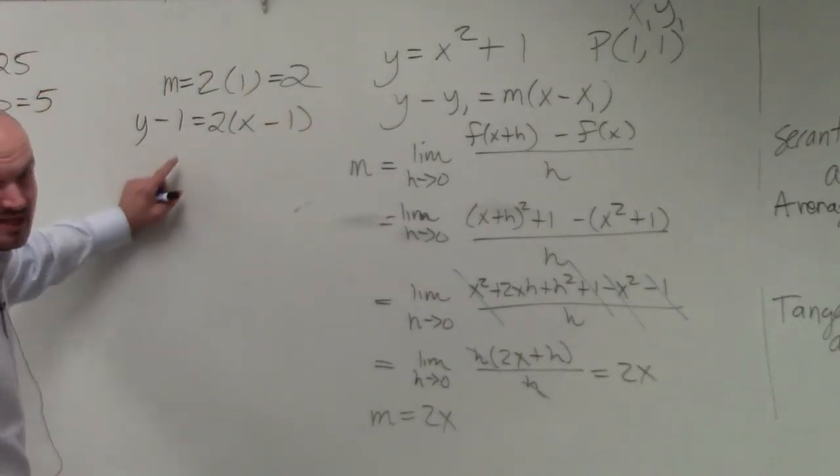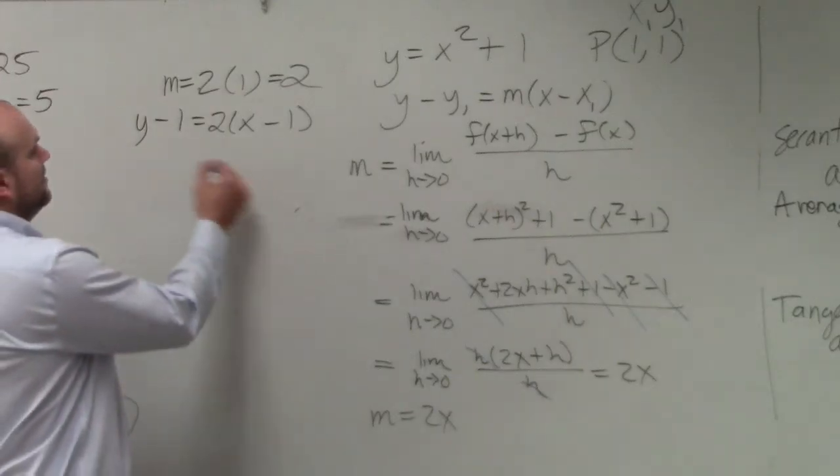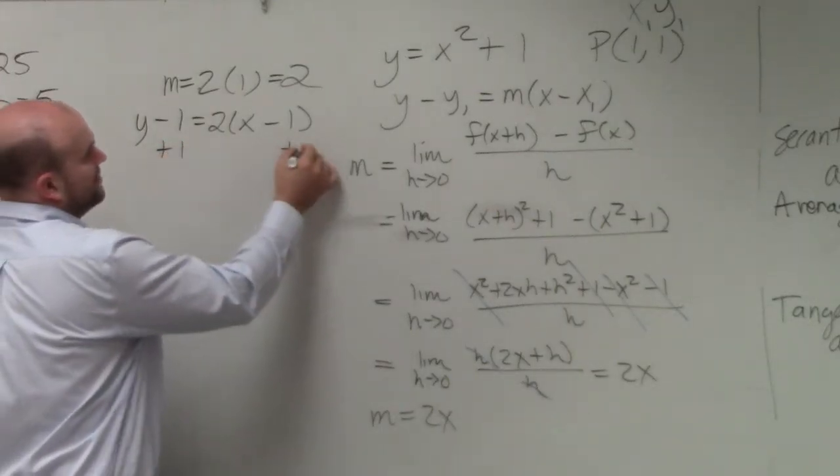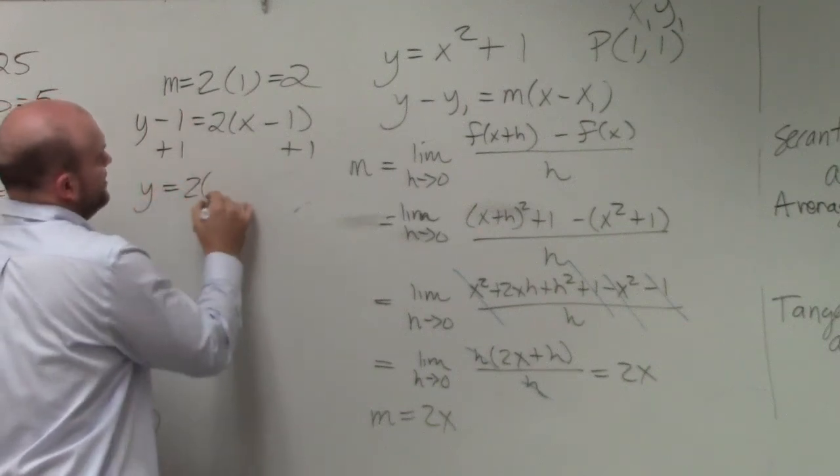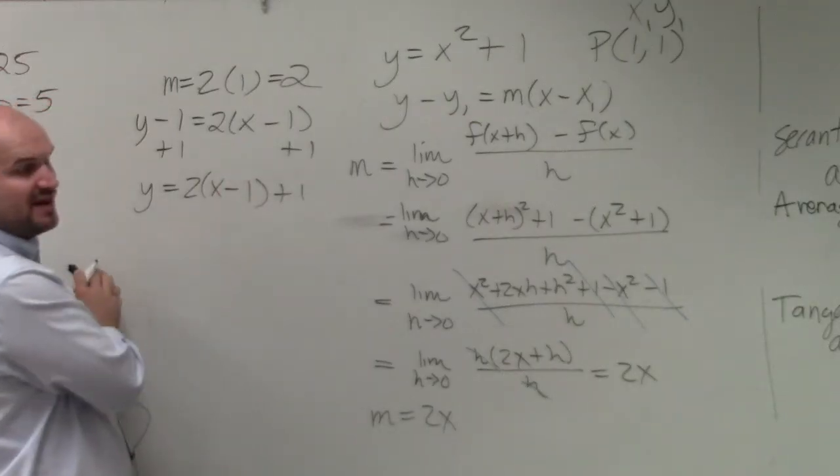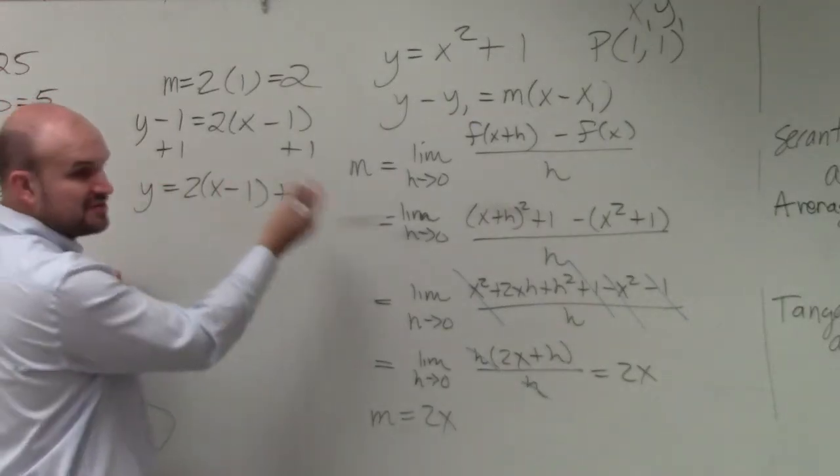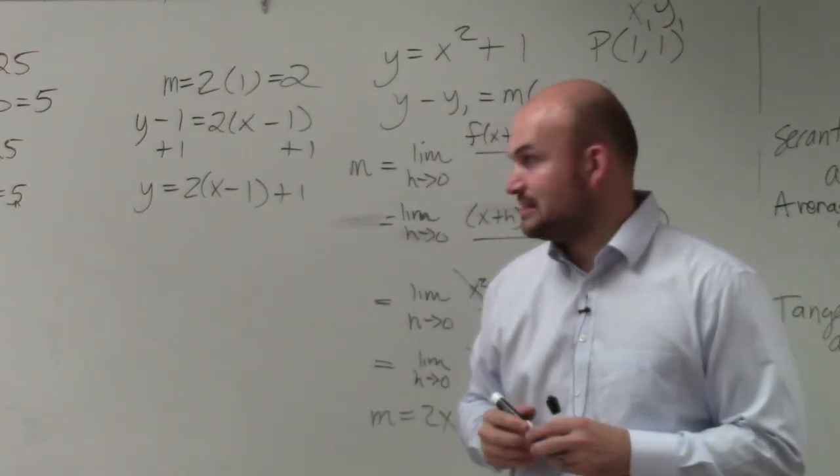And that's perfectly fine for your AP exam to leave it in that format. You don't need to do anything else. You could also just write it—actually, we do want to typically have at least solved for y, which is preferred. But that's perfectly fine. You don't need to go any farther than that. You could obviously distribute and put in slope-intercept form, but I'm just telling you that is perfectly fine and acceptable just like that.